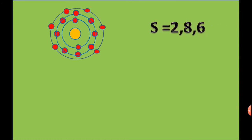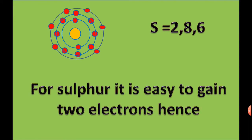Sulfur has electronic configuration 2,8,6. For Sulfur, it is easy to gain 2 electrons. Hence, the valency of Sulfur is equal to 2.